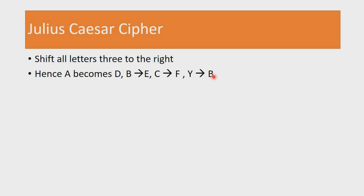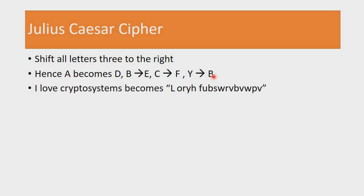So Y, Z, A, then B — that's how Y shifts to B. In the same manner, X becomes A and Z resolves to C. The algorithm simply shifts letters 3 to the right in a circular manner. A message such as 'I love cryptosystem' becomes a new cipher text, where every plain text element has been encrypted by shifting three times to the right — so C becomes F, R becomes U, and so on.